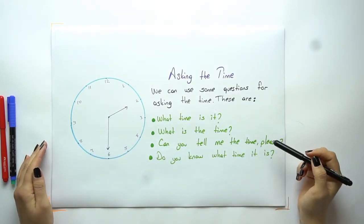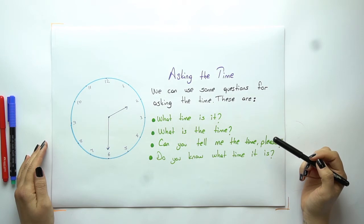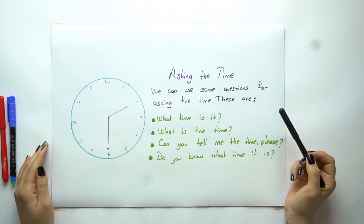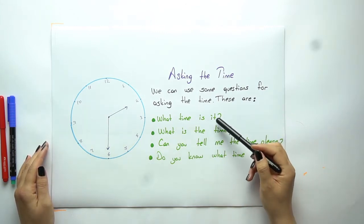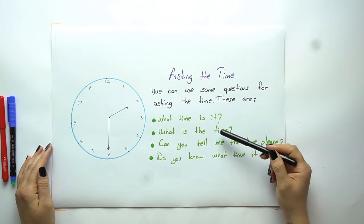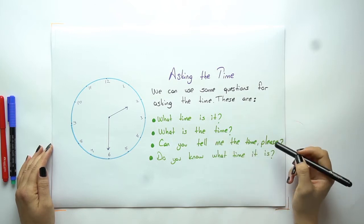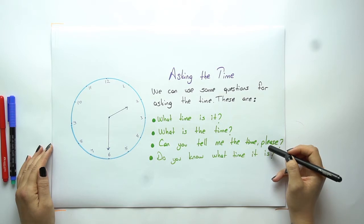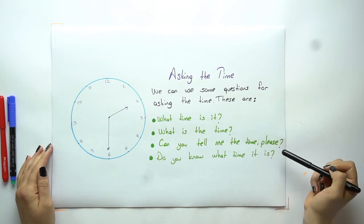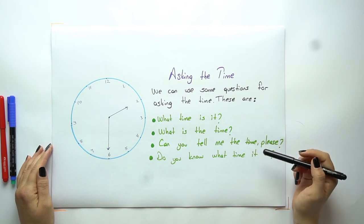First of all, we will start with how we can ask the time. So we can use some questions for asking the time. These are: 'What time is it?' If you don't know the time and you want to know about it, you can use this question. Second one: 'What is the time?' Another one: 'Can you tell me the time please?' It's important to use 'please' in your sentences if you want to ask someone a question. 'Do you know what time is it?' So these are our questions about how we can ask the time to somebody.